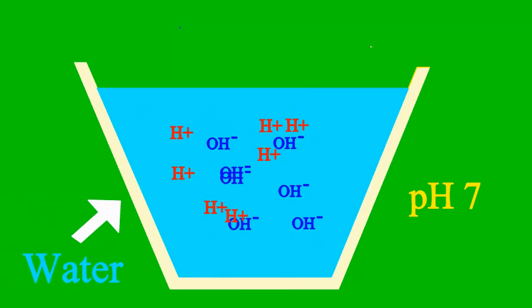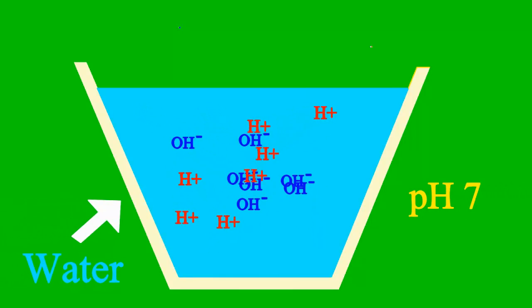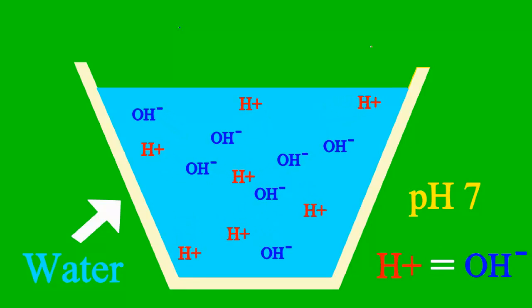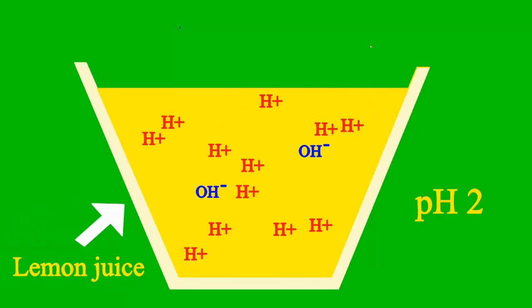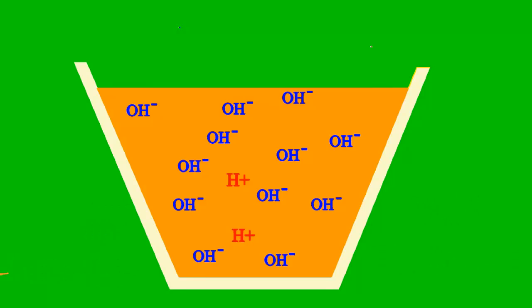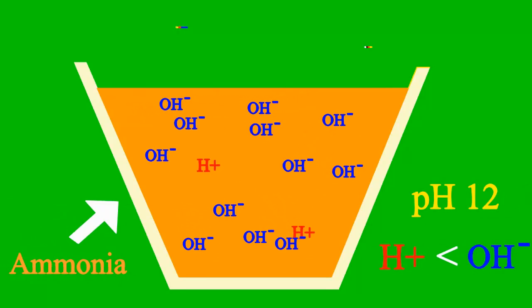When the pH is 7, then it's a case where the sample is neither acid nor base. But less than 7, it's an acid. More than 7, it's a base all the way.